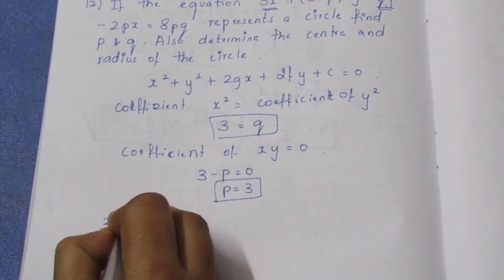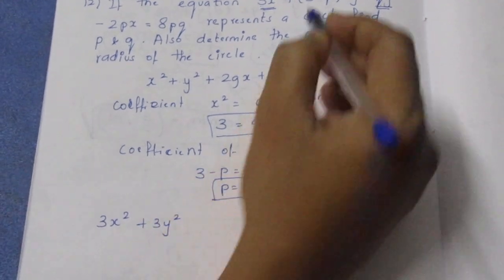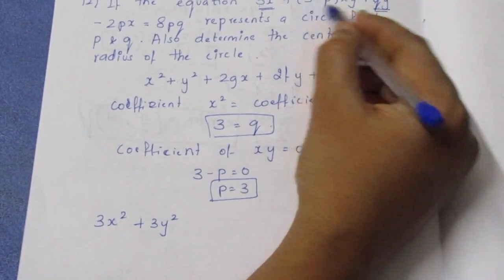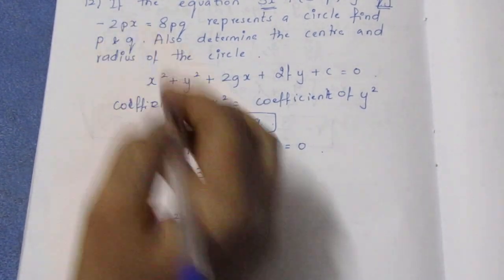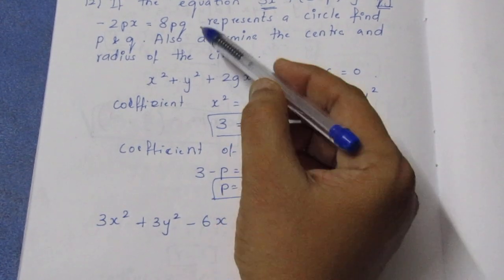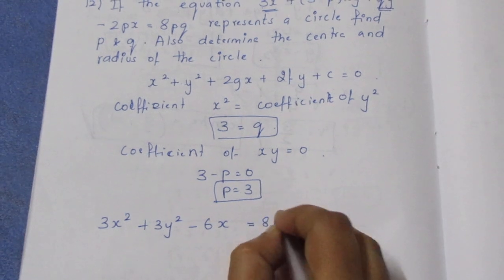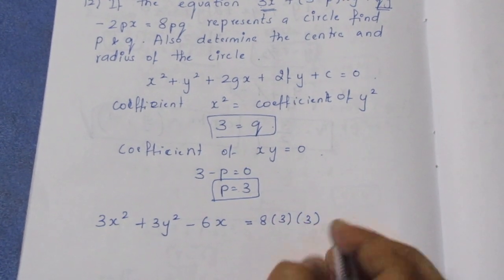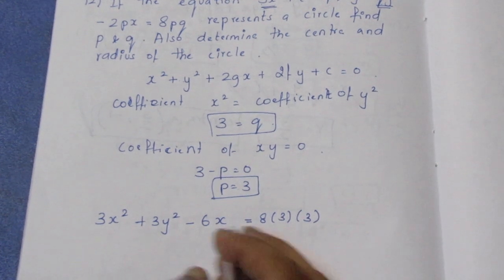3x². First, let me write this: 3y². If we put p = 3, this becomes 0. If we put p = 3, this is -6x. If p and q equal 3, this equals 8 × 3 × 3.